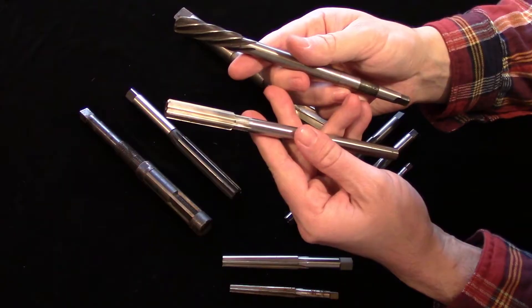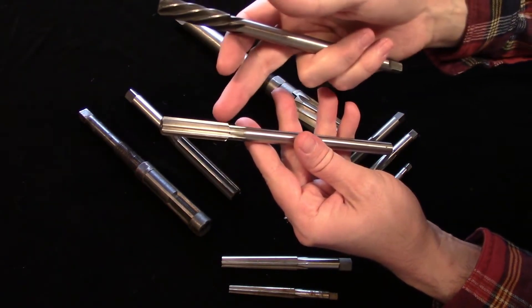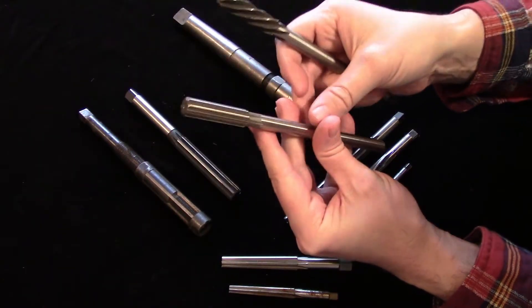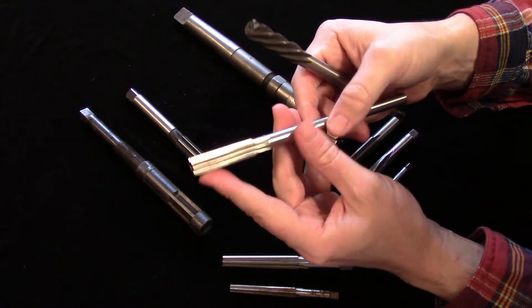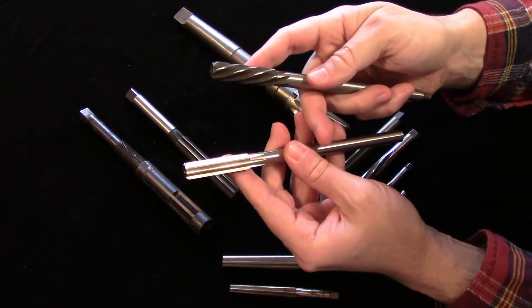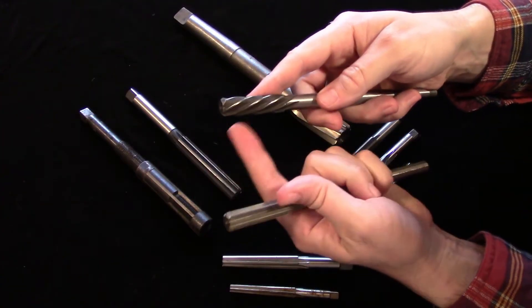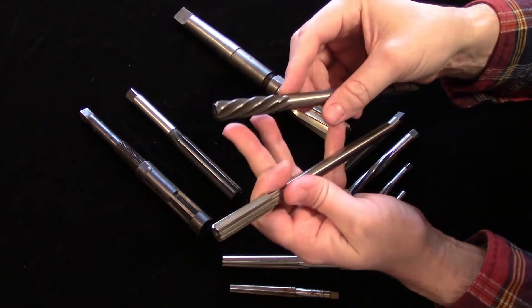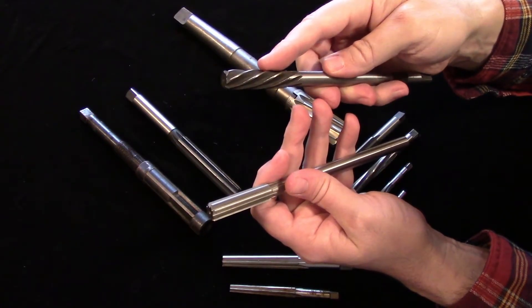The most common type of reamer is called a chucking reamer. It has a very long shank in relation to the flute length. This makes sure it's flexible enough to follow the pilot hole. The flutes are most often straight, but they can also be spiral, either right-handed to pull the chips out, or left-handed to push the chips forward. Pay attention to the direction of the cut though, because a left-handed spiral can still have a right-handed cut.